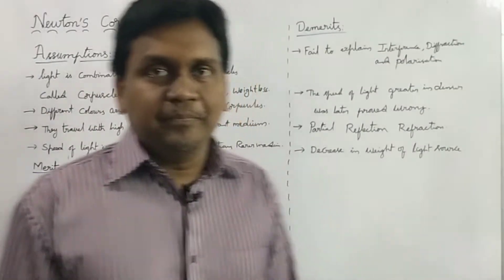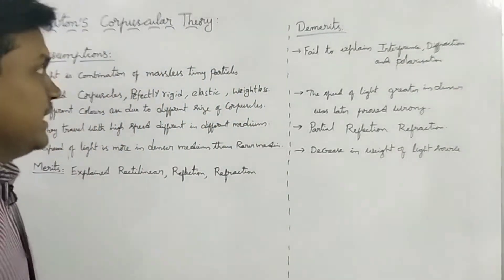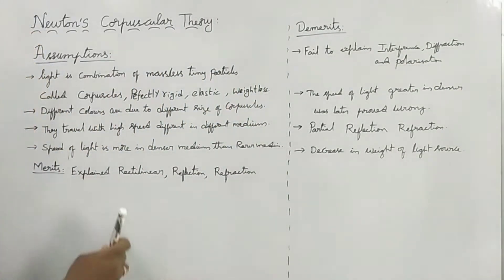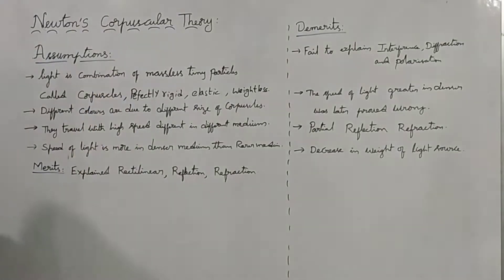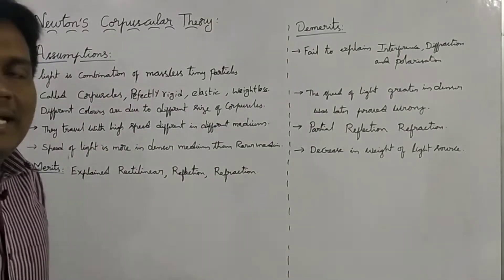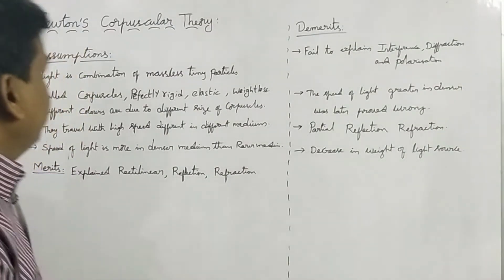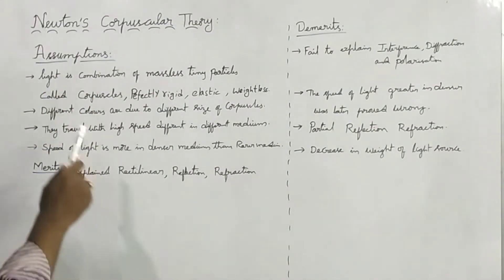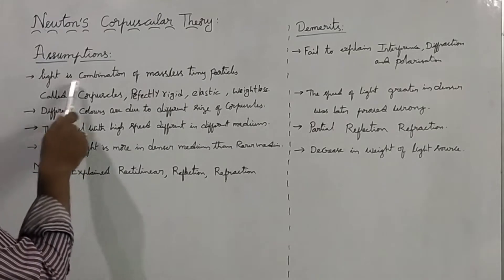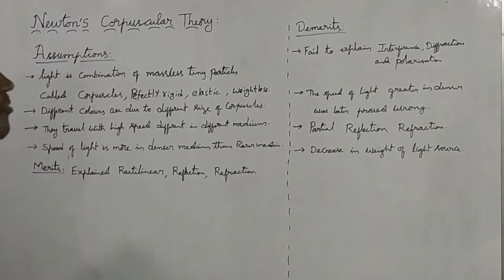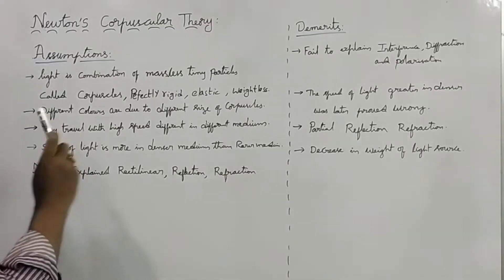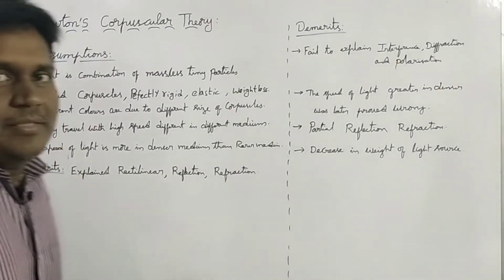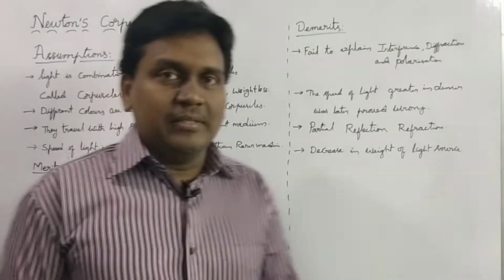In his theory, he did some assumptions. Coming to the first one: light is the combination of massless tiny particles. They are called corpuscles.